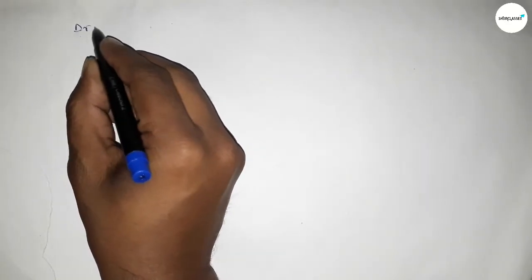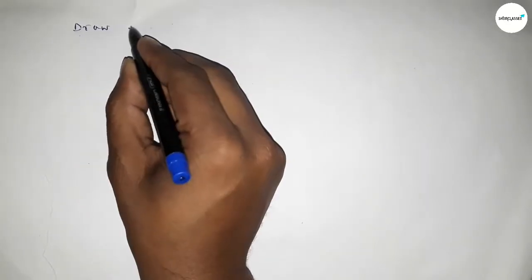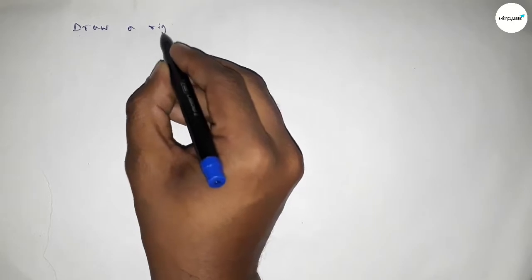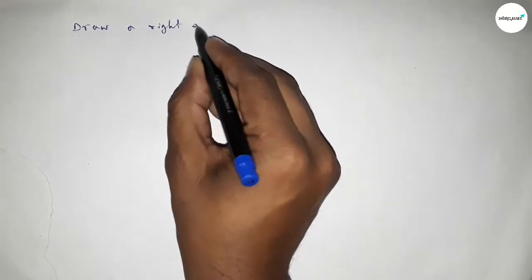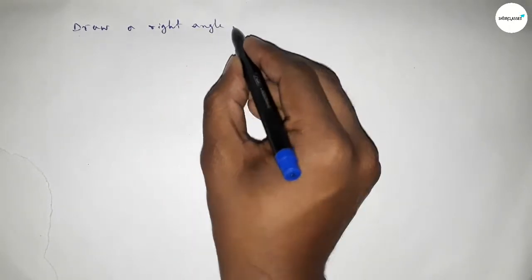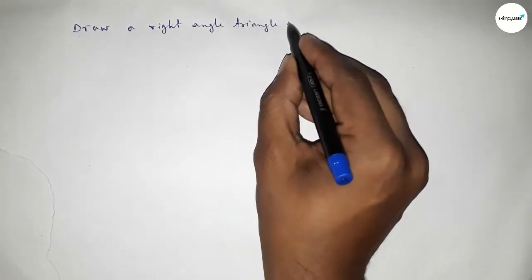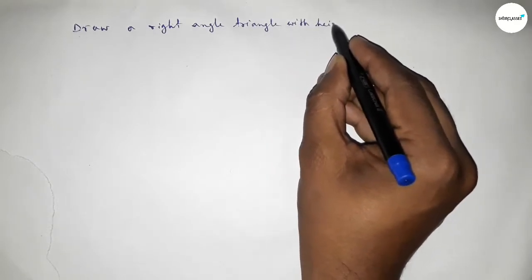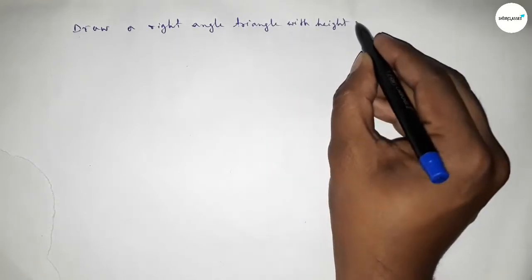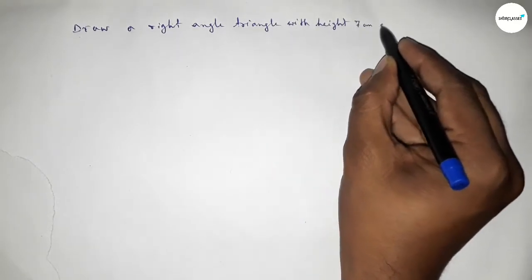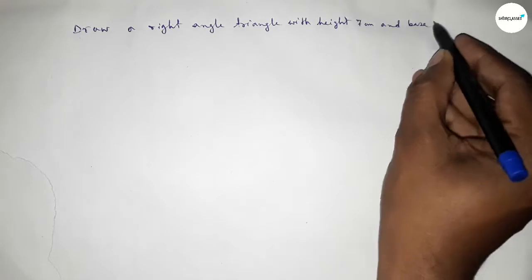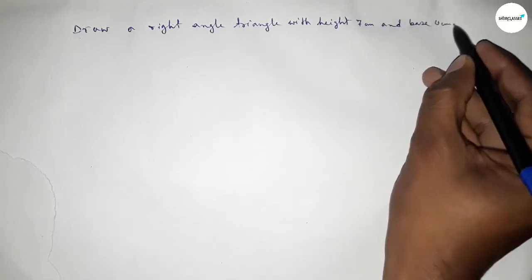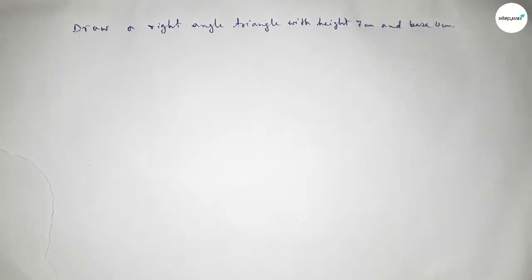Hi everyone, welcome to SI Share Classes. Today in this video we have to draw a right angle triangle with height equal to 7 centimeters and base equal to 4 centimeters. So let's start constructing a right angle triangle.